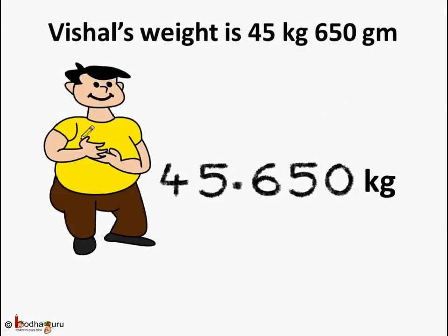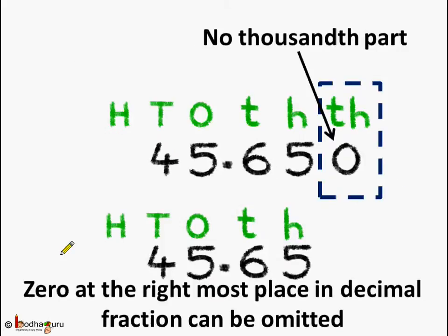We can say Vishal's weight is 45.650 kgs. You know, we can also simplify it further. Here the thousandths place has a zero. The zero doesn't have any value here, so we can omit it. So, 45.650 is same as 45.65. We removed the zero which was coming to the rightmost side. What do we see? Zero at the rightmost place in the decimal fraction can be omitted.